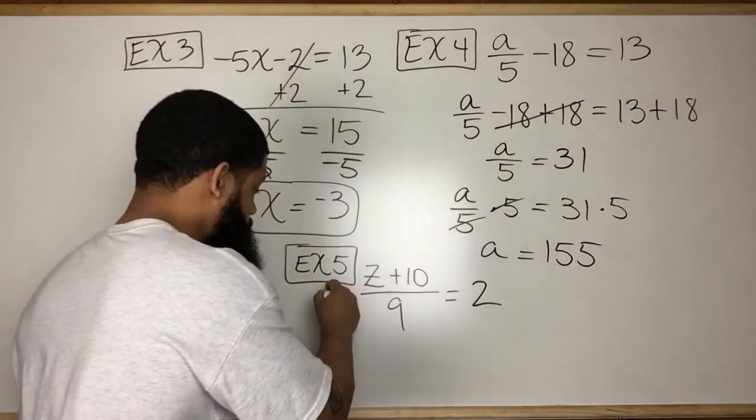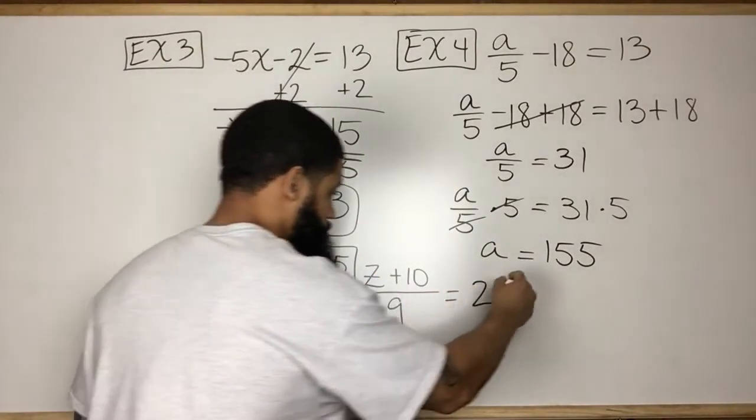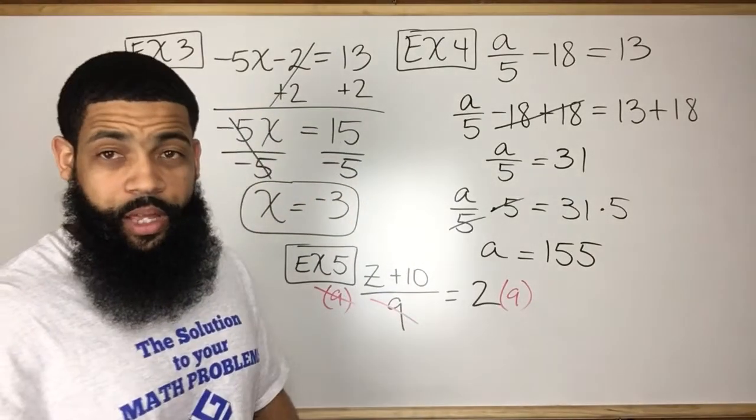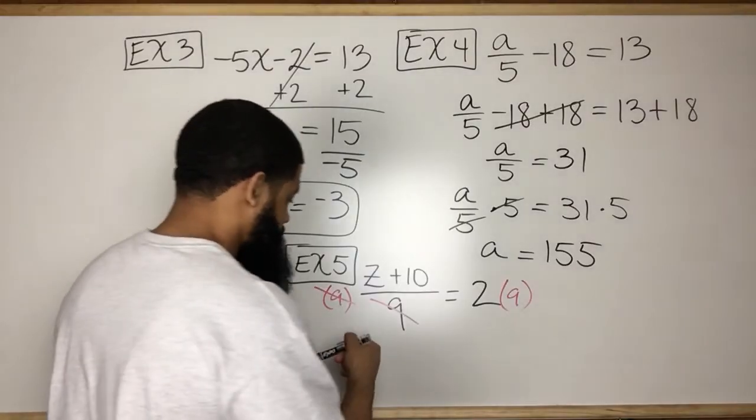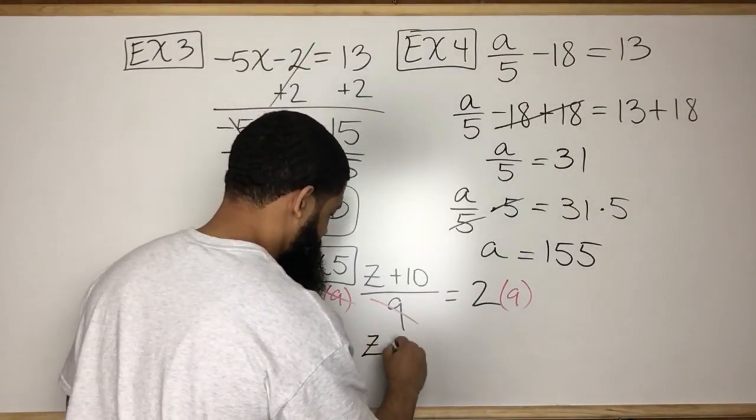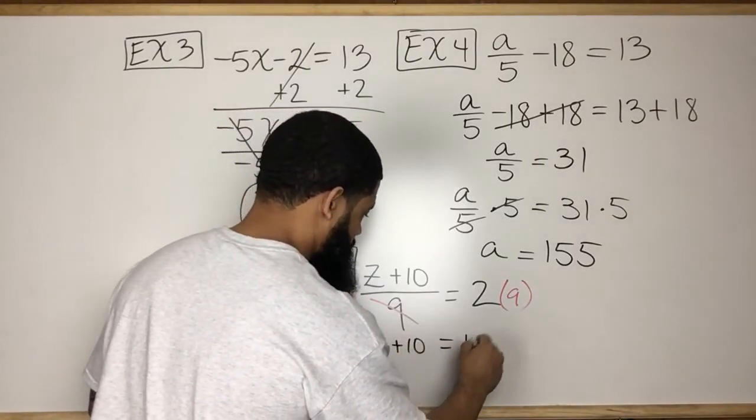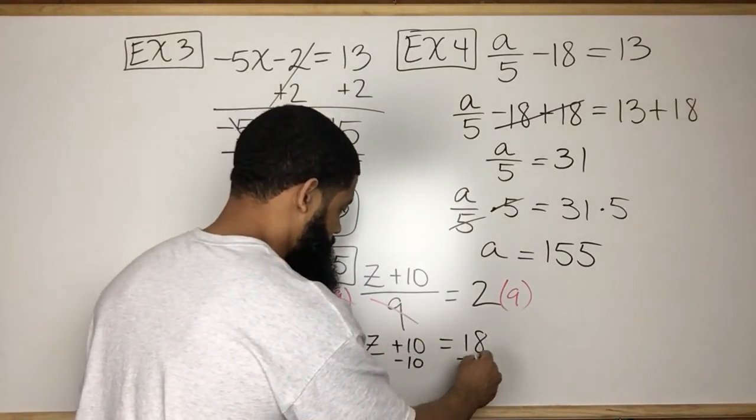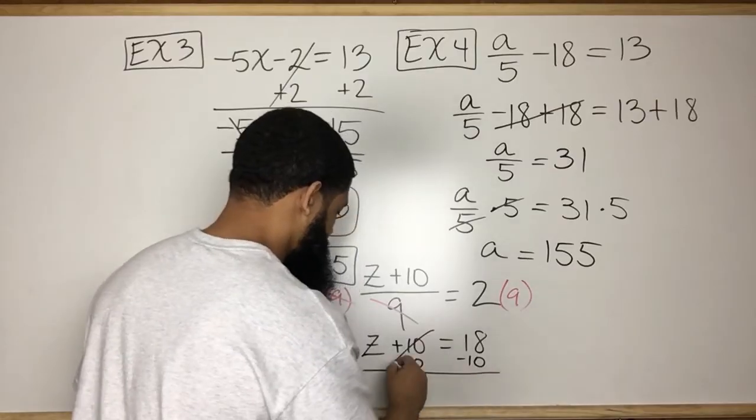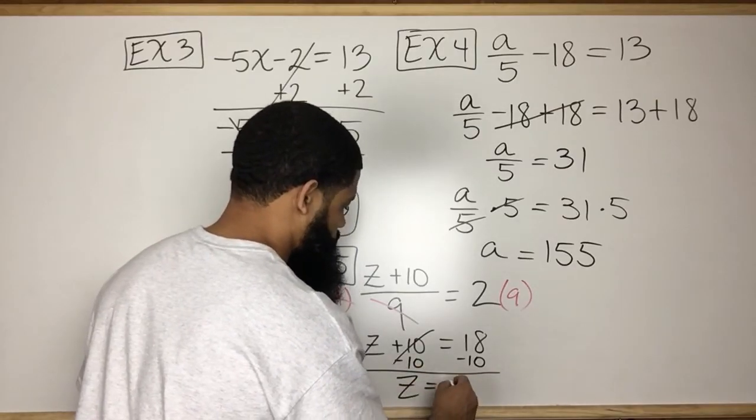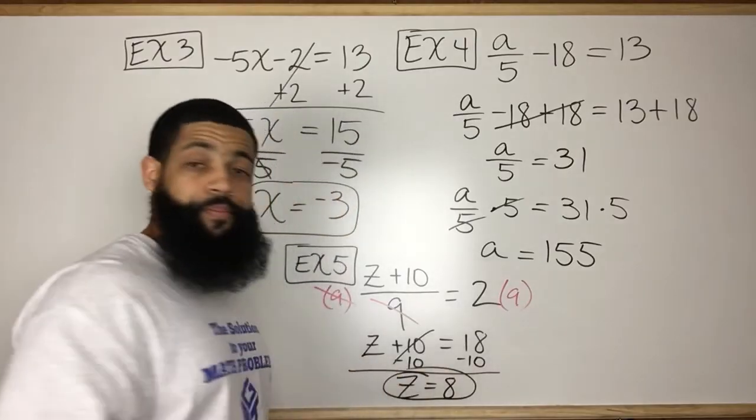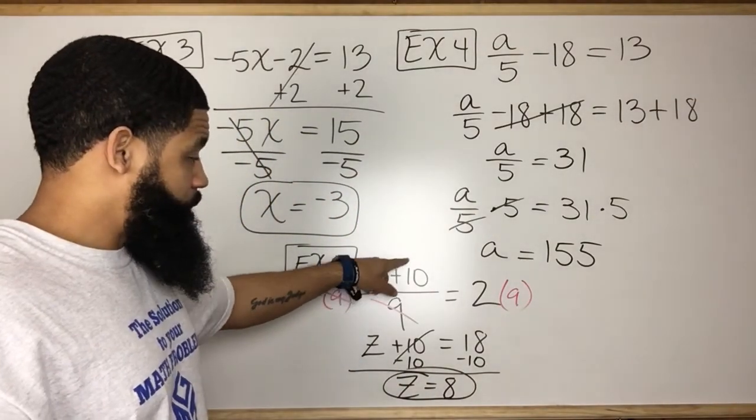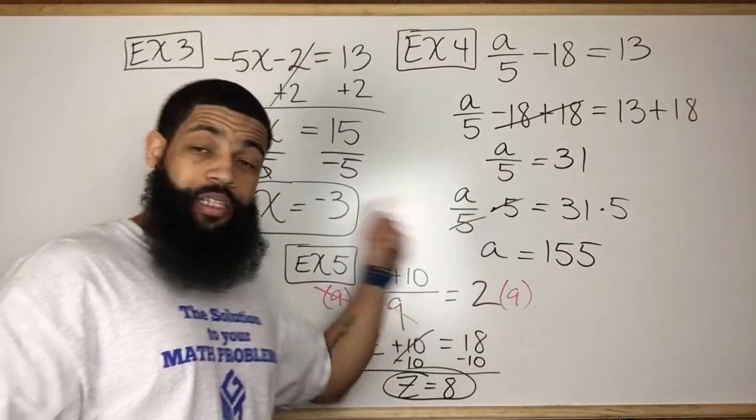Here, these will cancel. And then we'll have Z plus 10 left is equal to 18. And then the opposite of adding 10 is subtracting 10. Subtract 10 there. Cancel. Z equals 8. And once again, just to check it. 8 plus 10 is 18. 18 divided by 9 equals 2.